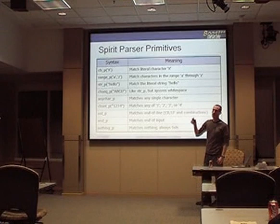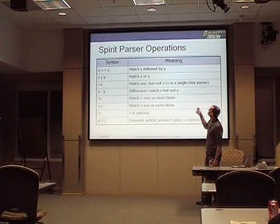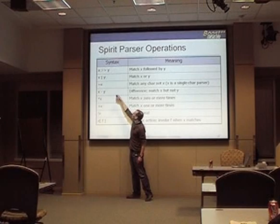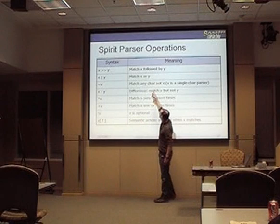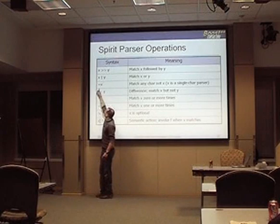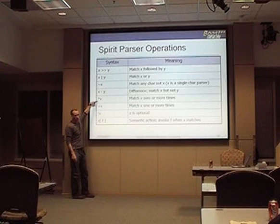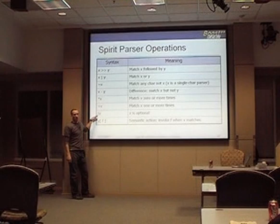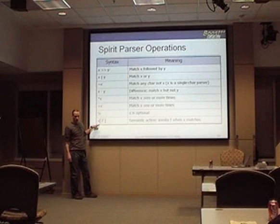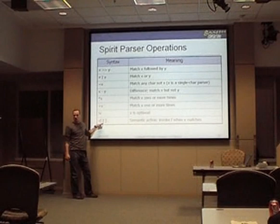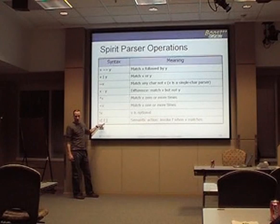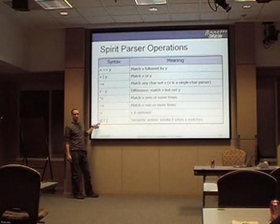These are the Spirit parser primitives — you can learn about this stuff on your own by reading Spirit's docs, which are very good. Here are the Spirit parser operators: this operator means match x followed by y; this means match x or y; we can complement a character; we can do parser difference — match x but not y. Zero or more, one or more, making something optional (like the regex question mark). This one is really interesting — when you put an action, this is like an STL predicate or a function — call this function on whatever this matches. This is very neat and very powerful.